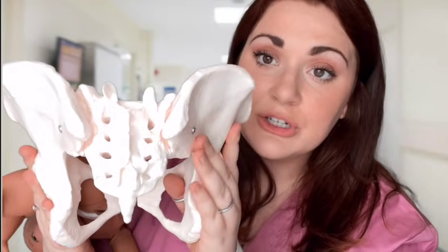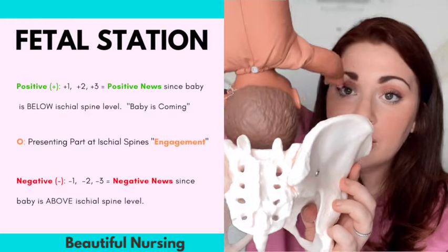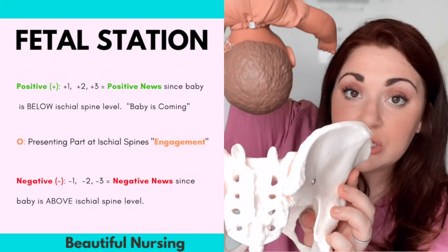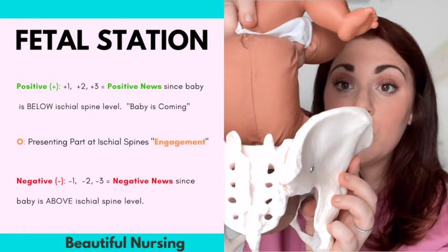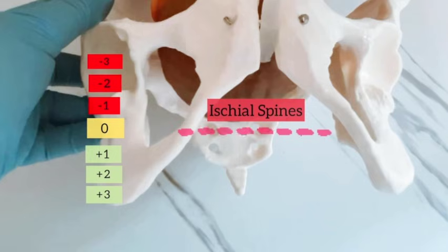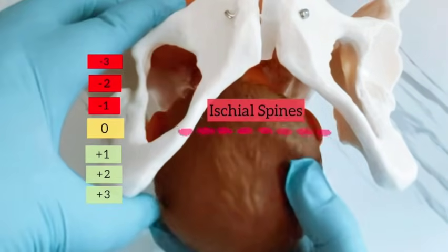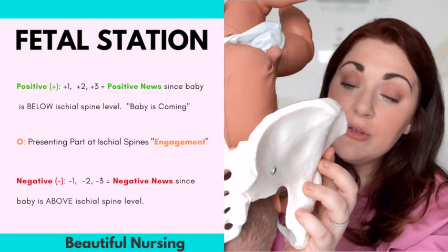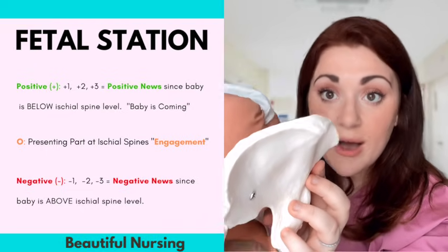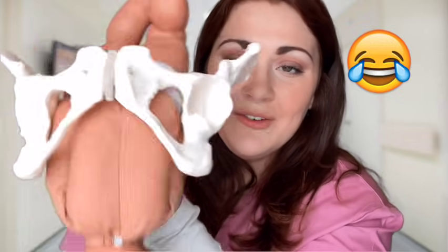Here's the maternal pelvis — I turned it around so you guys can see the ischial spines right here. These are those two little spiky parts. If Gina is up here, that means she is negative — she's above the ischial spines. As she descends down the birth canal, she becomes more positive. Once her head, or whatever the presenting part is, reaches the ischial spine, that is when she is at zero. As Gina continues down the birth canal, she goes from negative to zero to positive.